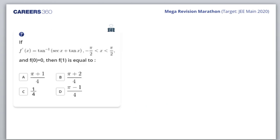Next question: f'(x) = tan⁻¹(secx + tanx) in the interval (-π/2, π/2), and f(0) = 0. Then f(1) is equal to? f'(x) is given and I am being asked the value of the function at 1 - clearly it has to do something with a differential equation. Tarun, you got C. Rajvama, you got B.